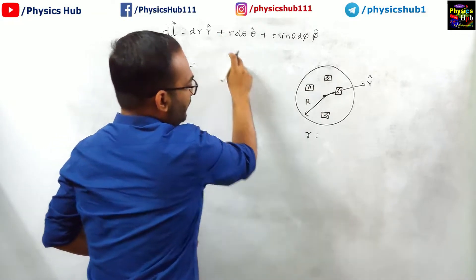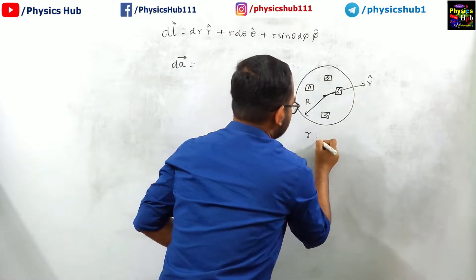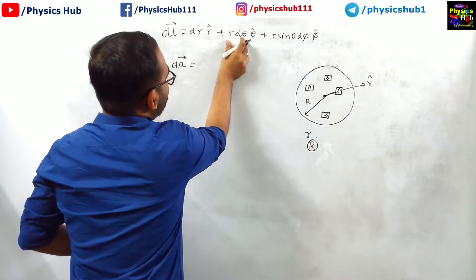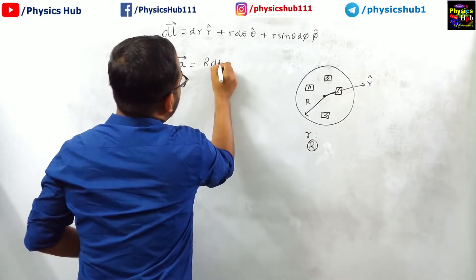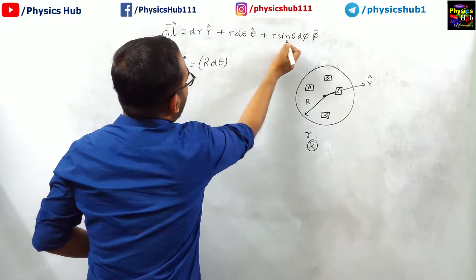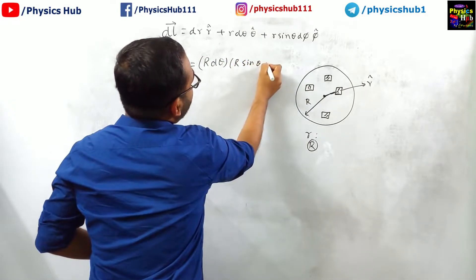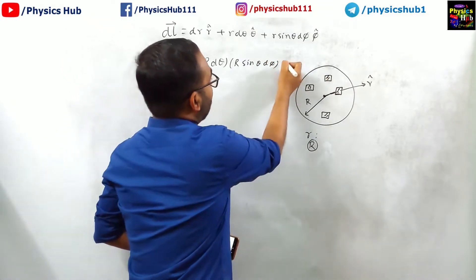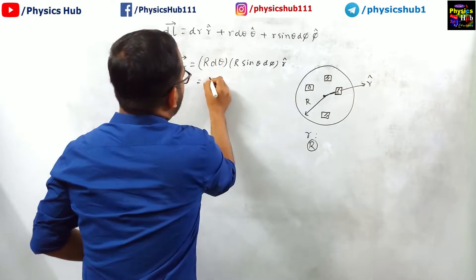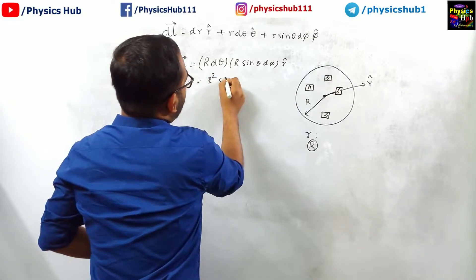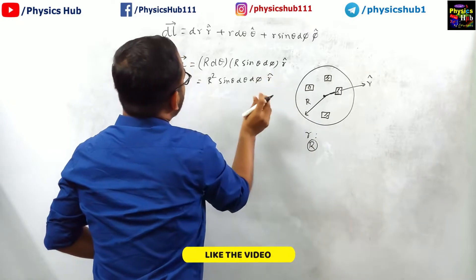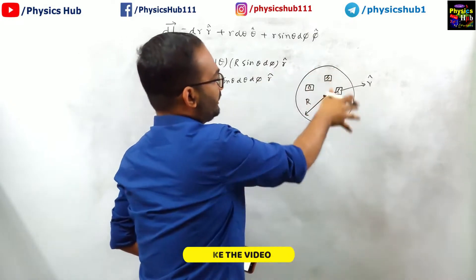Now what is r? r at the surface is capital R. So this one is not contributing, this r d theta is contributing. So r d theta multiplied by r sin theta d phi gives you the area, the direction is r cap. So that is why you get r square sin theta d theta d phi r cap. This is the area element for this sphere.